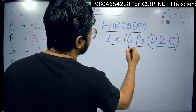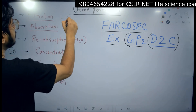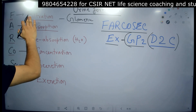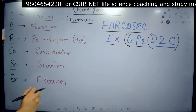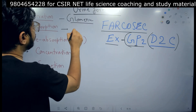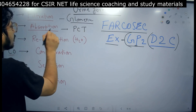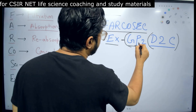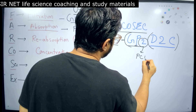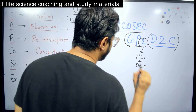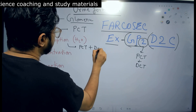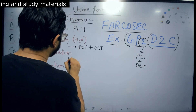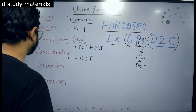We have GP2 to D2C. Starting with G — G means glomerulus. So, filtration is done in the glomerulus, known as glomerular filtration. Then P stands for proximal convoluted tubule — absorption takes place in the proximal convoluted tubule. Then we have reabsorption and the '2' written means it has both proximal convoluted tubule as well as distal convoluted tubule involved. So both PCT and DCT are involved. Then concentration — that is D — D for distal convoluted tubule, DCT.